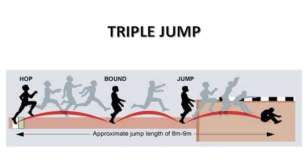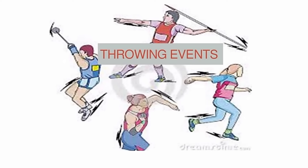The triple jump, formerly called the hop, step, and jump, relies heavily on horizontal velocity. It is a speed event. The triple jumper must take off and land on the same foot in the first jump, take off and land on the opposite foot in the second jump, and may land in any manner on the third jump. The triple jumper must also possess balance and a high level of leg strength and power.